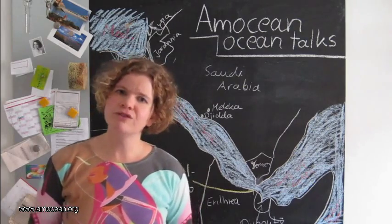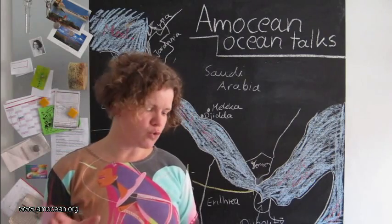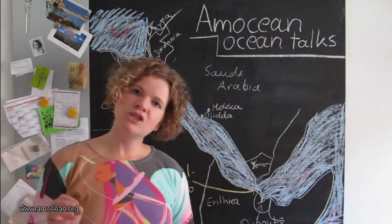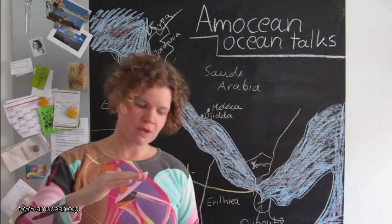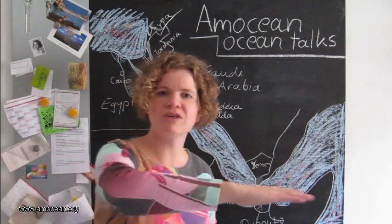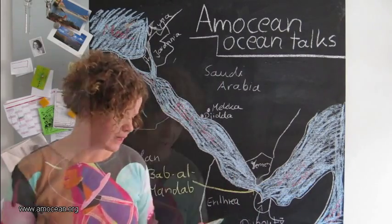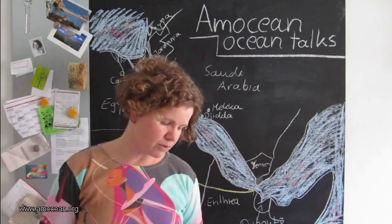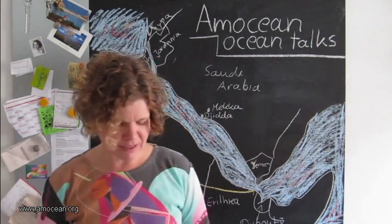The most often cited theory says that it comes from the periodic bloom of Trichodesmium erythraeum, a filamentous cyanobacteria which sometimes blooms, covers huge surfaces, and colors them red. But there are other theories, and we will probably never know what the real origin of the name is.